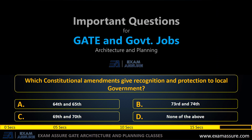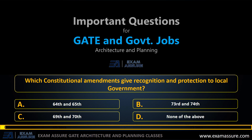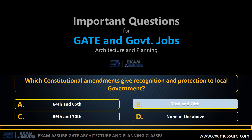Which constitutional amendment gives recognition and protection to local government? Option A: 64th and 65th amendment act. Option B: 73rd and 74th amendment act. Option C: 69th and 17th amendment act. Option D: None of the above. The correct answer is Option B: 73rd and 74th amendment act.